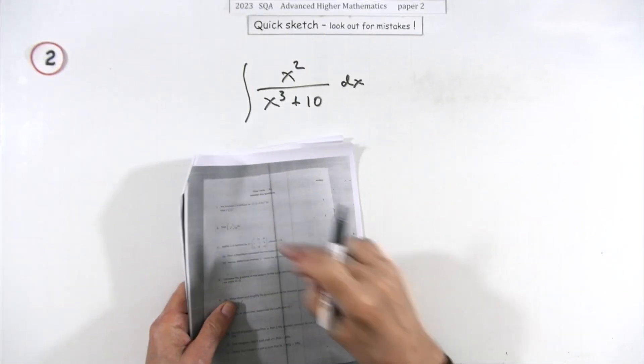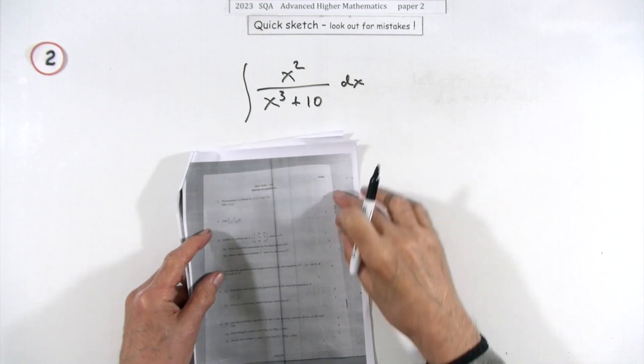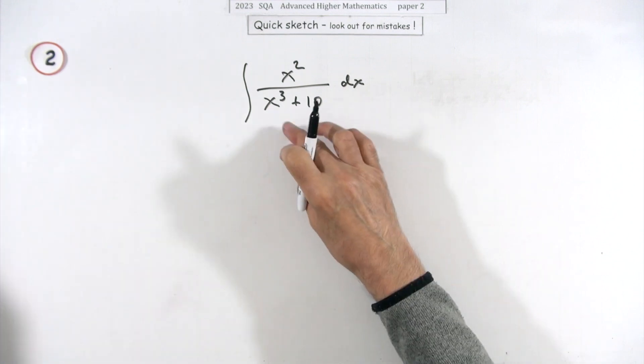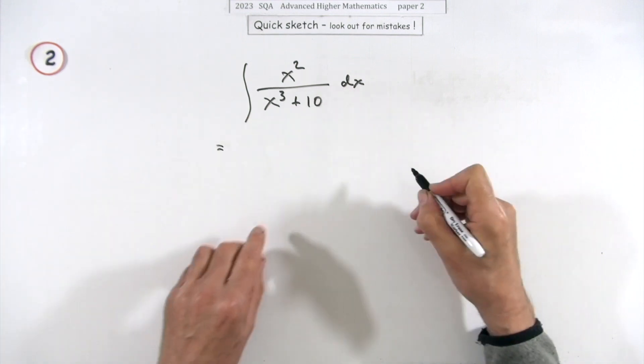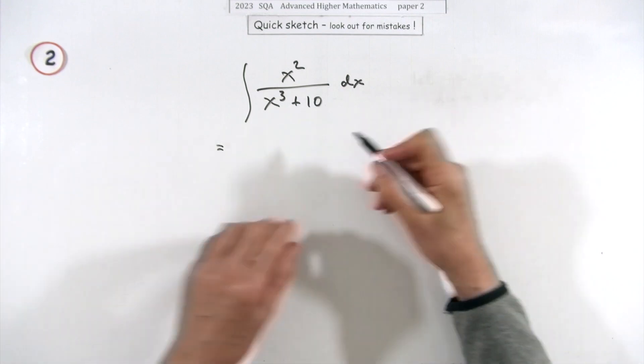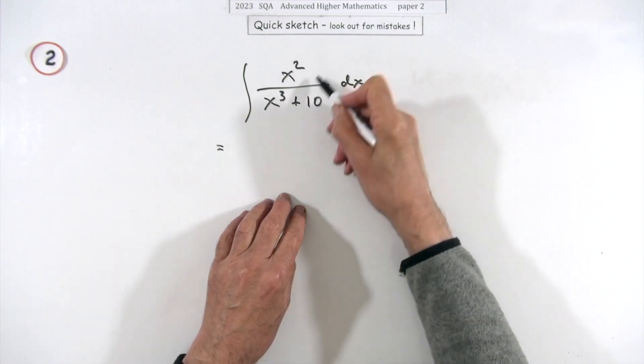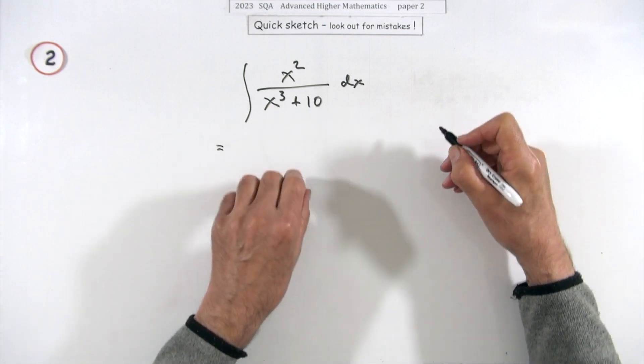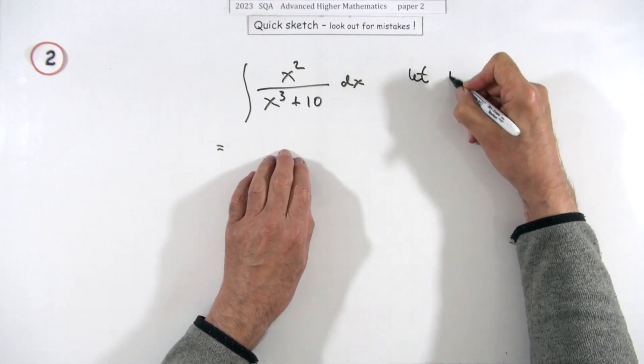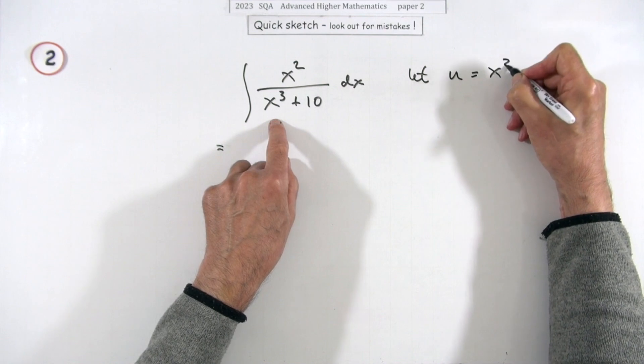So question two then. Two marks here for carrying out this integration. You have to do this by yourself, being left to your own devices here, but it's quite clearly a substitution because you can see this top part is related to the derivative of the more complicated part there. So I'll just let u equal that bundle there.